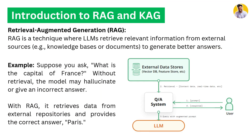So first, what is RAG? RAG is a technique where large language models retrieve relevant information from external sources like vector databases to generate an answer. For example, if you want to ask what is the capital of France, sometimes the model hallucinates. You provide context with your prompt and then the model generates the correct answer — Paris.